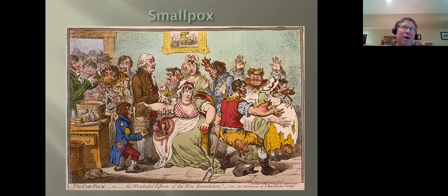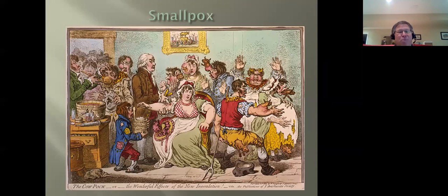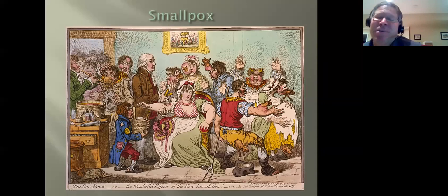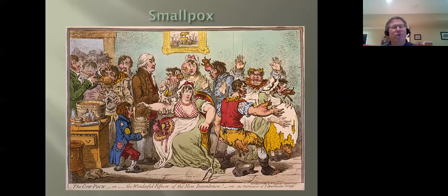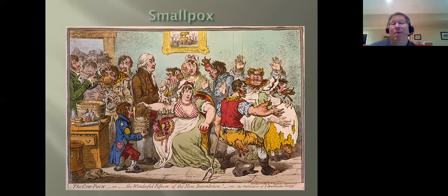Now we move on to another epidemic that shows up in our history textbooks: smallpox. Who developed the smallpox vaccine? I hope there's at least one Edward Jenner in the room. Since it's a history presentation, I thought we'd use some primary sources too. Here is the cowpox cartoon — they were using the cowpox virus to vaccinate people, and it was the first vaccine. Notice the cartoon is saying people are going to become cows because they're being inoculated with the cow virus.